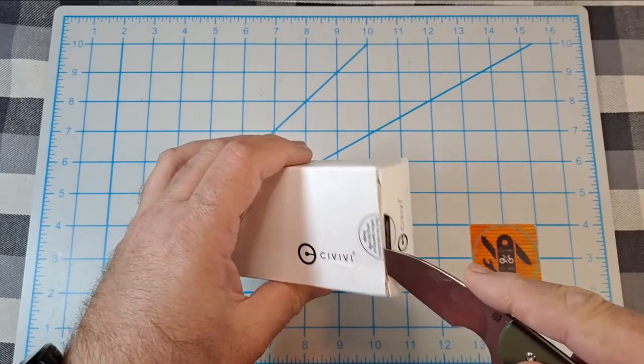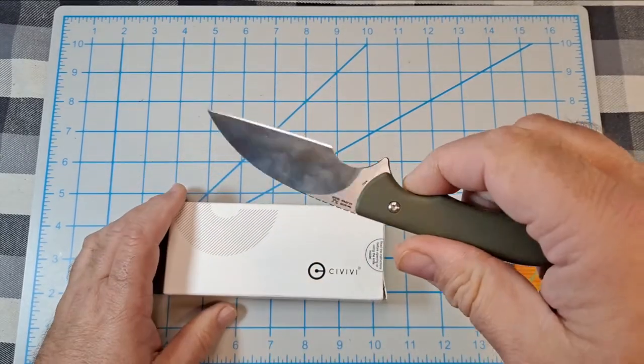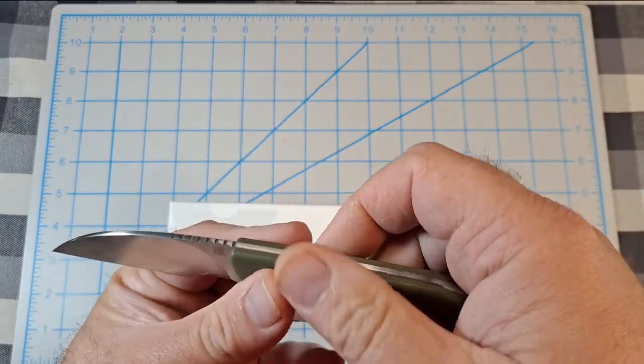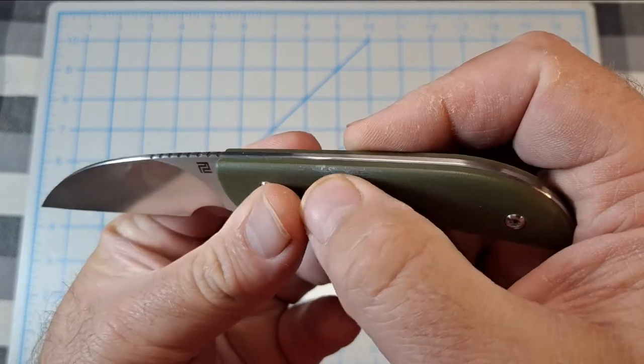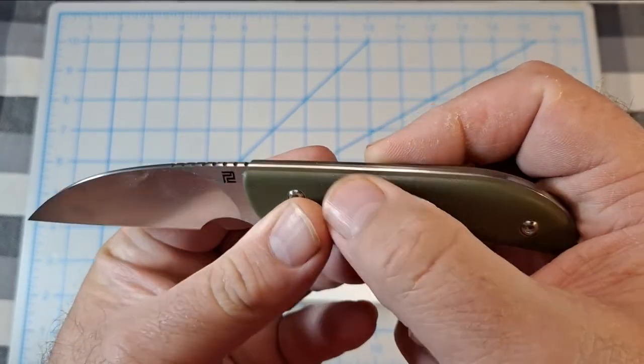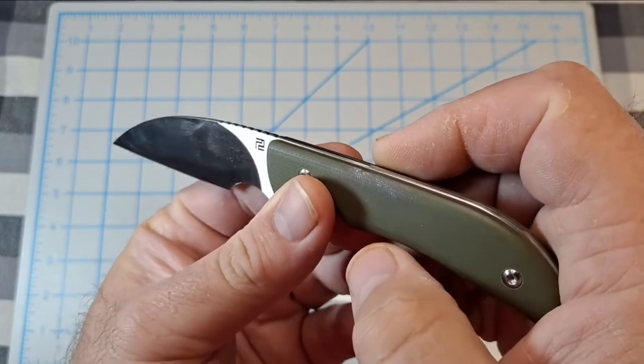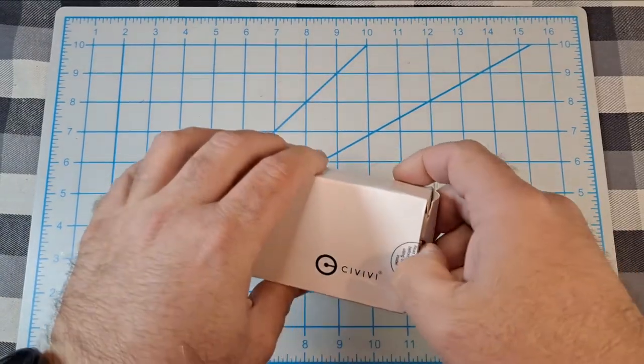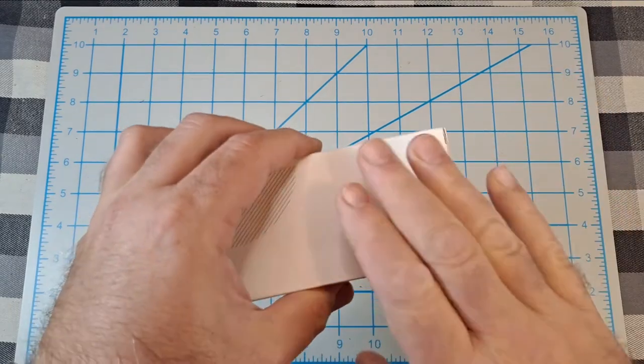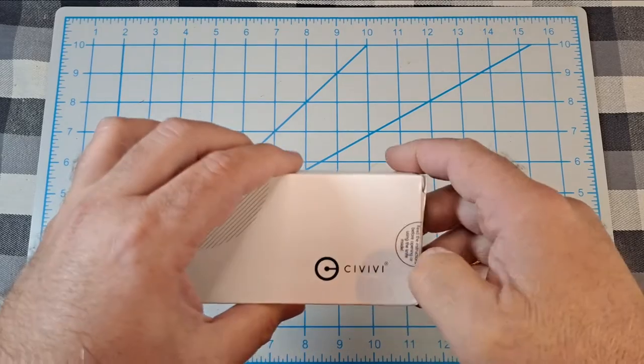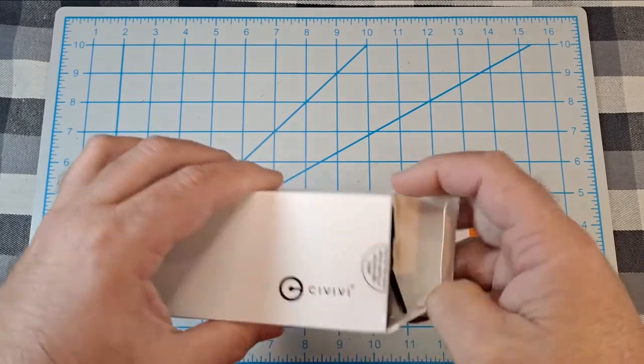Let's get this thing open. I'm using the Artisan Cutlery Sea Snake. I've noticed the way I've been carrying it, my belt buckle is rubbing on the scale there. I'll have to change it up a little bit.